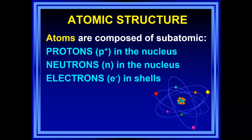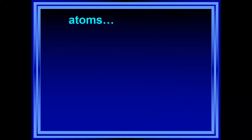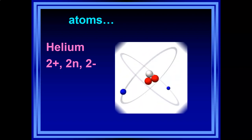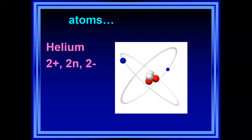Your textbook prefers the term shell. So atoms are composed of protons, neutrons, and electrons. A good example is helium — it has two of everything: two protons, two neutrons, and two electrons. In the nucleus at the center we have the protons and neutrons, and spinning around in blue are the electrons traveling in the orbital shells.